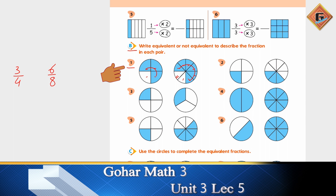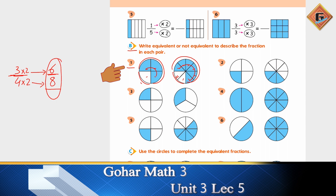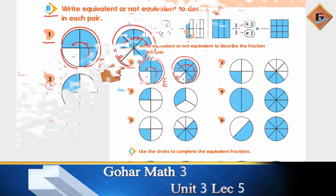To check if the fractions are equivalent, multiply the numerator and denominator by the same number and see if you get the other fraction. Looking at the shapes, the shaded part appears equal. To be more sure: multiply 3 by 2 — 3×2=6 — and 4×2=8. Since multiplying by the same number gives us the matching fraction, we say it is equivalent. Write 'E' for equivalent.